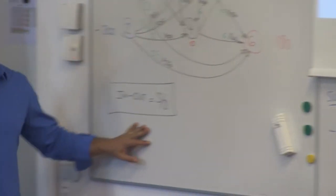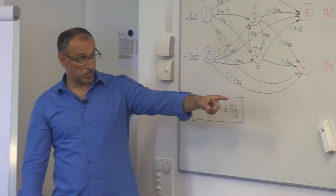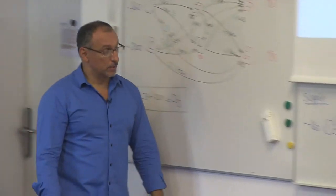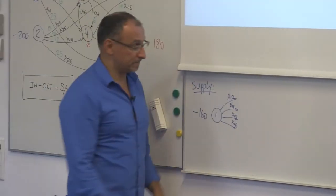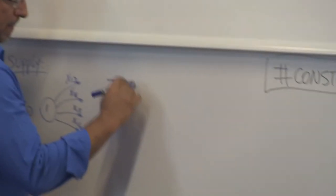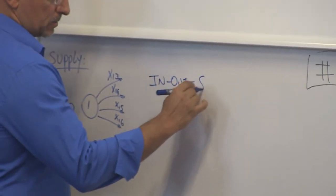We apply the balance of flow rule: in minus out equals supply, in this case. So what's coming in? Nothing is coming in, no arcs coming into 1. So, and I'll write it here, in minus out equals supply.